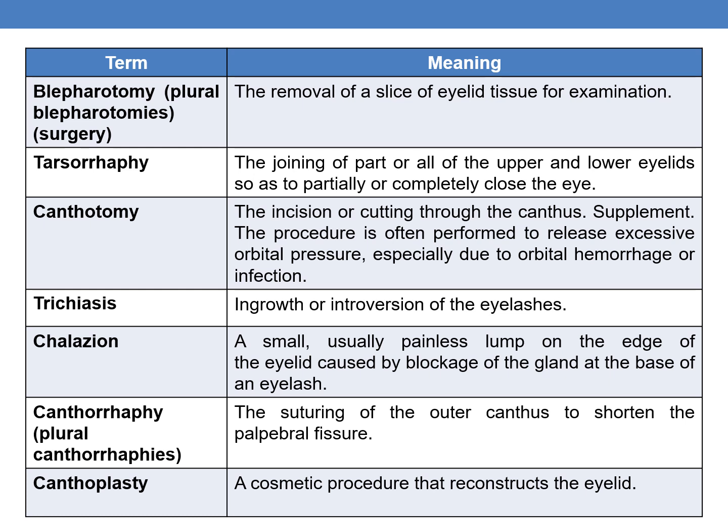The next term is canthorrhaphy. It is suturing of the outer canthus. Canthorrhaphy is nothing but suturing of the outer canthus to shorten the palpebral fissure. The next term is canthoplasty. It is a cosmetic procedure that reconstructs the eyelid.